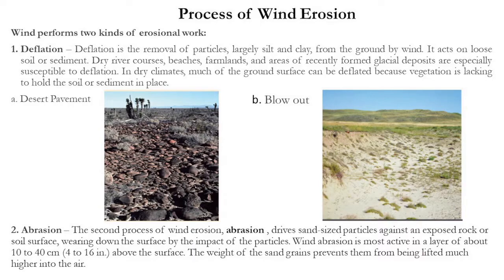Desert pavement forms because of deflation: the loose sand or clay particles are blown away by the wind and the underlying rock and pebbles become visible, making way for desert pavement. In a blowout, deflation causes a depression in the land surface — there may be a wide, saucer-shaped depression in a relatively larger area of the desert region.